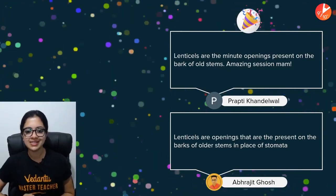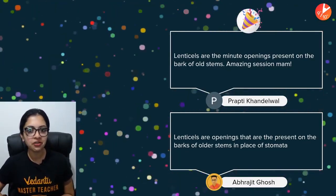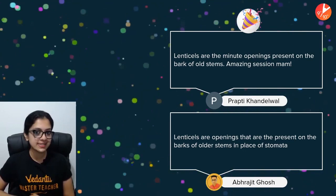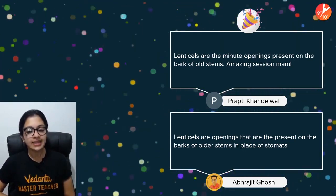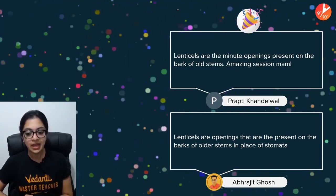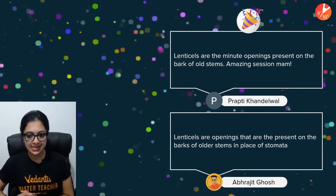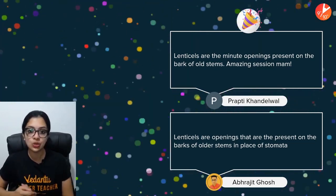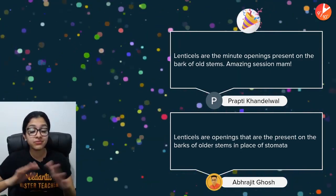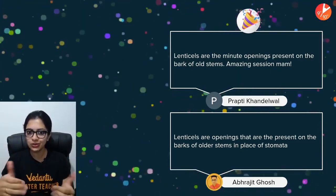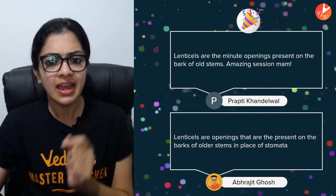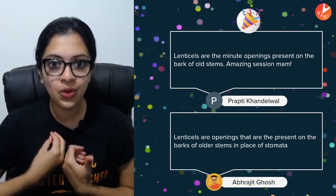Starting with the homework I gave you in the last session — remember: what is a lenticel? Many of you gave me the answer. Prapti says lenticels are the minute openings present on the bark of old stems. Abrajit also says lenticels are openings present on the barks of older stems in place of stomata. Very well said — bang on, good job, thank you so much children.